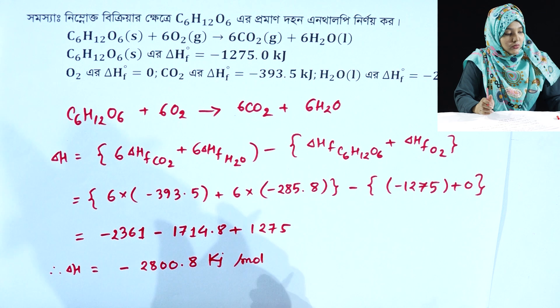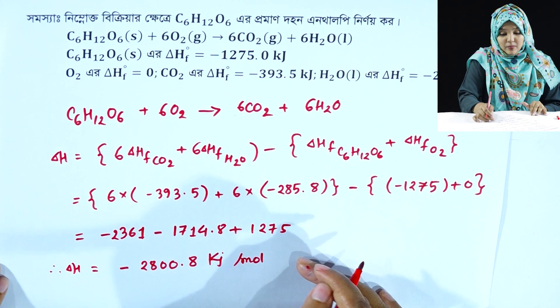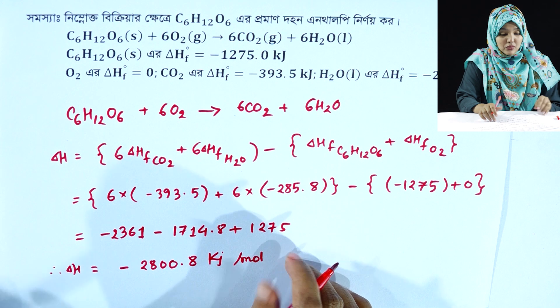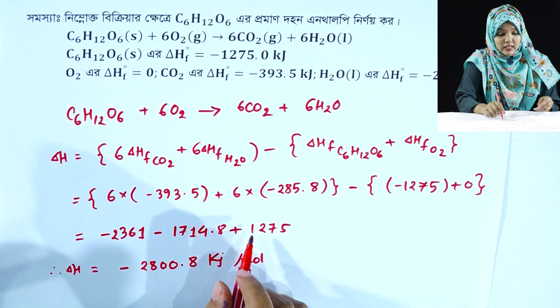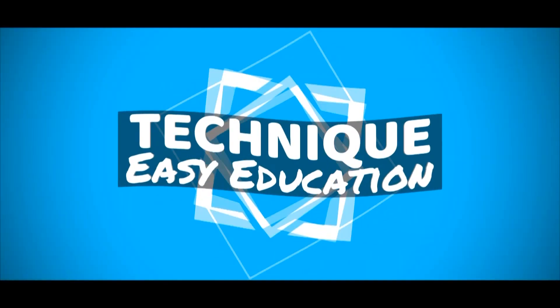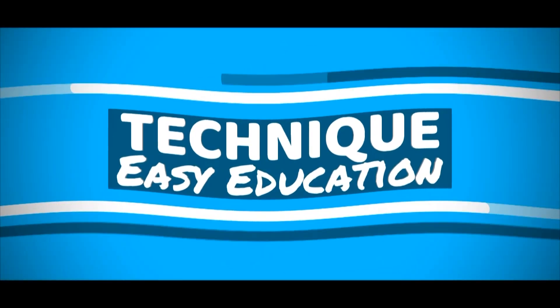That means, per mole of glucose combustion, the amount of heat produced is 2808.8 kilojoule per mole. This reaction is an exothermic reaction. So this is our solution. Hope everyone understood — please like, share, and subscribe. Thank you very much for watching the video.